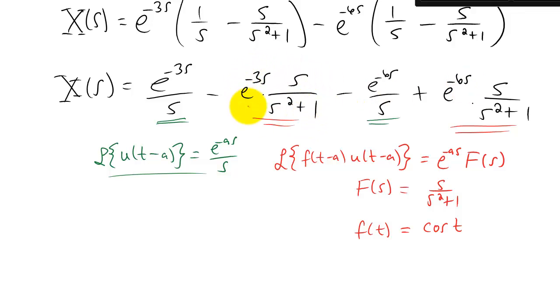Of course the inverse transform of this entire term here requires us to use an A value of three. And the inverse transform of just this term is going to then be cosine of the quantity T minus three times the step function U of T minus three. Let's write out the answer.